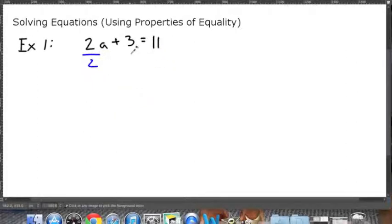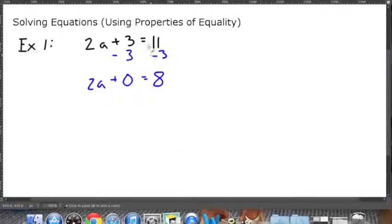Whenever you're solving an equation like this, you want to start with your addition or your subtraction. So we want to move this 3 over to the other side first. So we're going to start by subtracting 3 to get rid of this positive 3. And whatever we do to the left side, we have to do the right side. Now, we're left with 2a plus 3 minus 3 is 0 equals 11 minus 3 is 8. We know that 2a plus 0 is just 2a. So 2a equals 8.